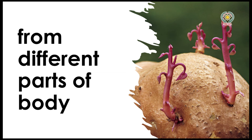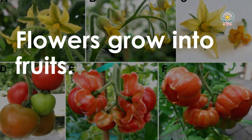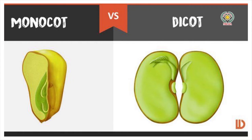New plants from seed: most plants bear flowers. Flowers grow into fruits. Fruits contain seeds inside them. Some fruits have one seed in them and some fruits have many seeds.